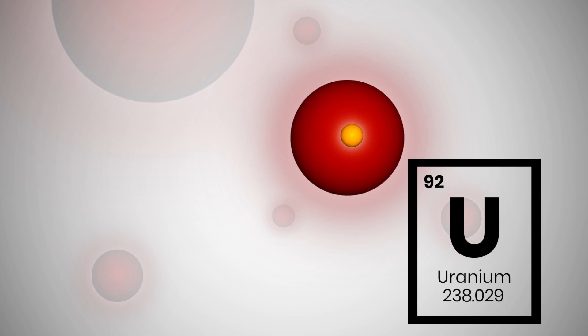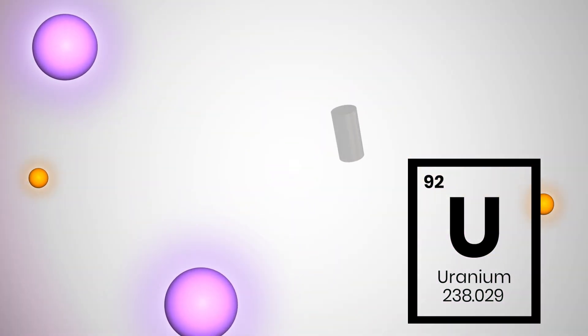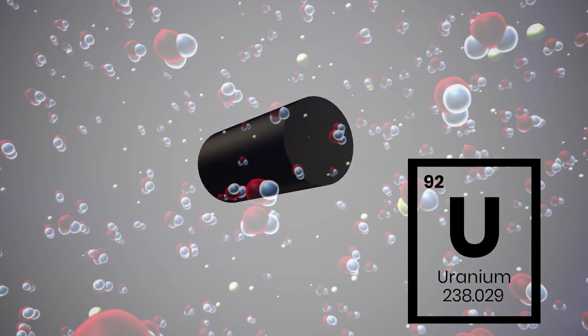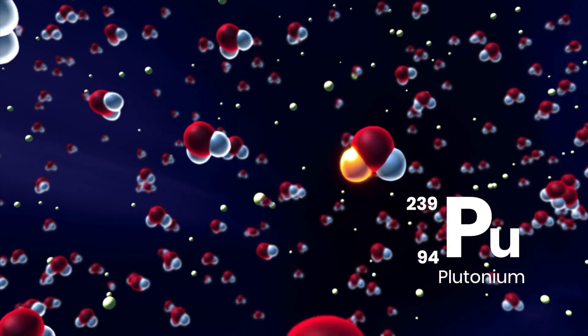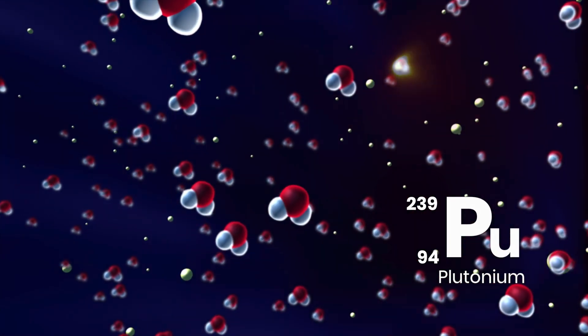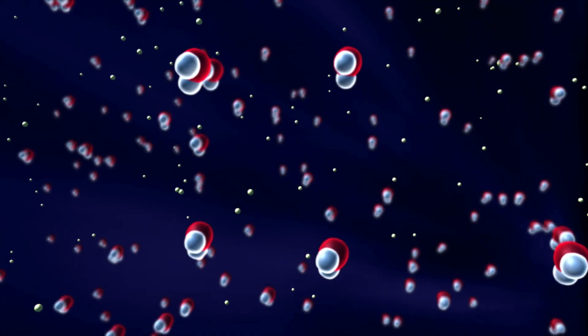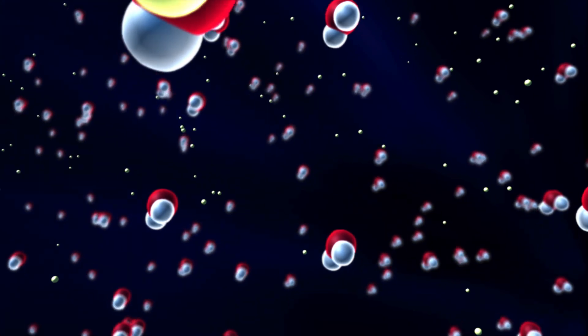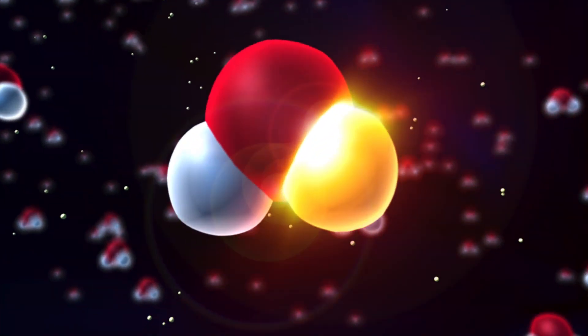When uranium-238 absorbs neutrons, it becomes plutonium-239, which is also a fissile isotope. So as the fuel burns up, it actually increases in reactivity. Every bundle reaches that point at a different time, and as a collective, the reactor has its own unique plutonium peak, which will occur around 39 full power days.